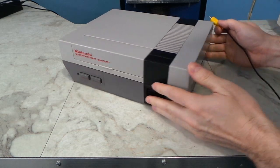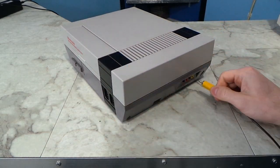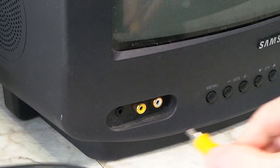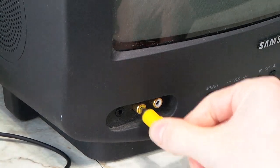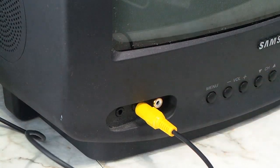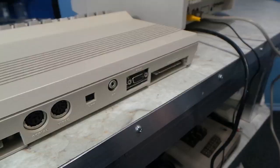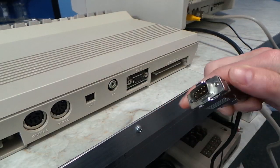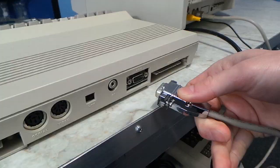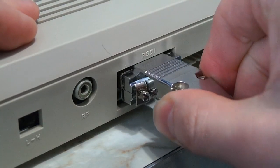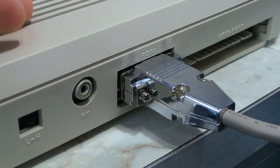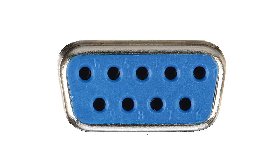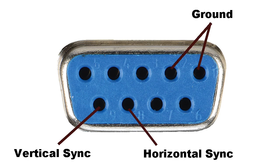Composite you probably already know about — it's that little round RCA jack that's been in use for decades and most modern televisions still have at least one of these jacks on them. The RGBI standard, on the other hand, has been obsolete since the 1980s. It used a 9-pin D-sub connector.